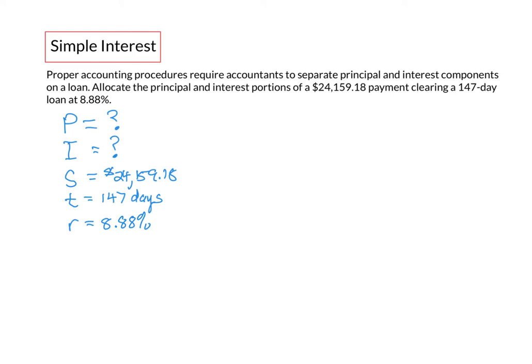Now let's apply what we know about simple interest. We know that the maturity value S is going to equal the principal plus the interest. We have a value for S that we can substitute but we don't have values for P and I and we can't solve an equation with two unknowns. In simple interest we also know that the interest is equal to P times R times T, so we can replace I here with PRT.